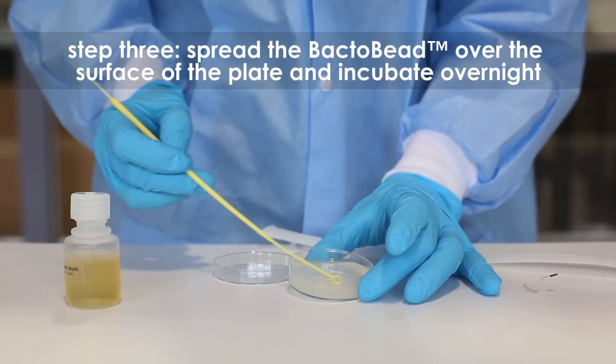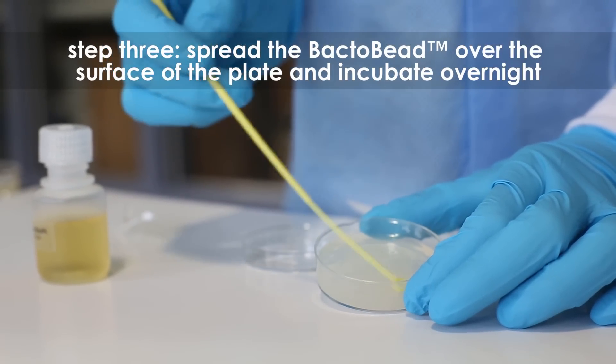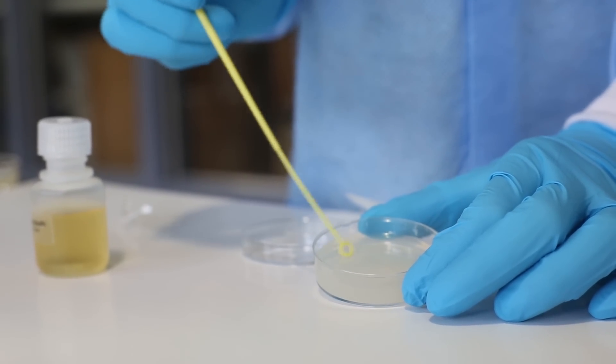Step 3: Spread the Bacto Bead over the surface of the plate using an inoculating loop. Try not to gouge the agar with the loop. Incubate the plates inverted at room temperature overnight.